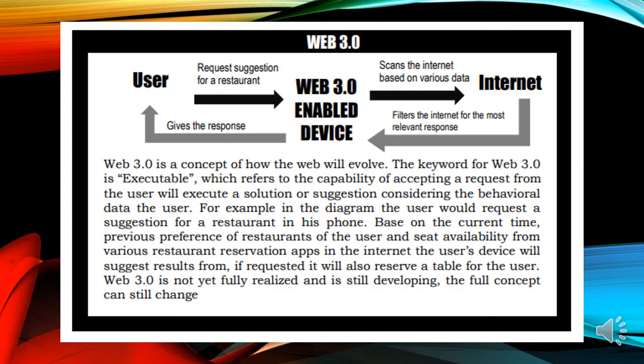Web 3.0 is a concept of how the web will evolve. The keyword for Web 3.0 is executable, which refers to the capability of accepting a request from the user and executing a solution or suggestion based on the user's behavioral data. For example, the user would request a suggestion for a restaurant on their phone; based on the current time, previous restaurant preferences, and seat availability from various restaurant reservation apps on the internet, the device will suggest results. If requested, it will also reserve a table for the user. Web 3.0 is not yet fully realized and is still developing, so the full concept can still change.